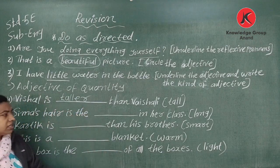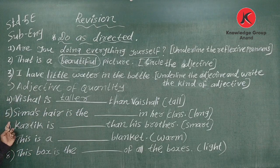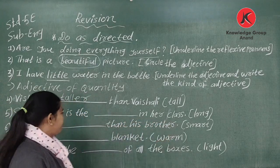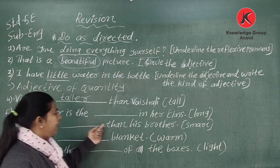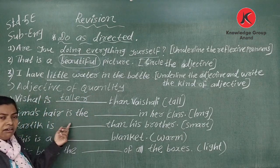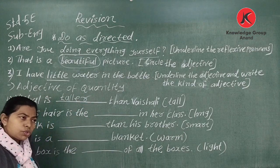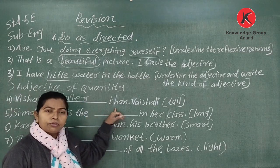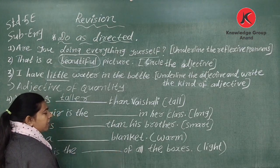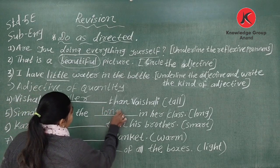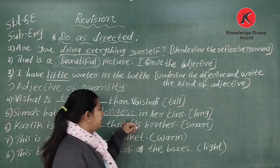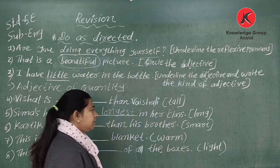So Visar is taller than Vaishali. Number five: the blank comes before 'than,' so it is superlative degree — wait, blank comes before 'than' so it is comparative. 'Seema's hair is the longest in her class' — 'long' plus E-S-T gives us 'longest,' the superlative form.